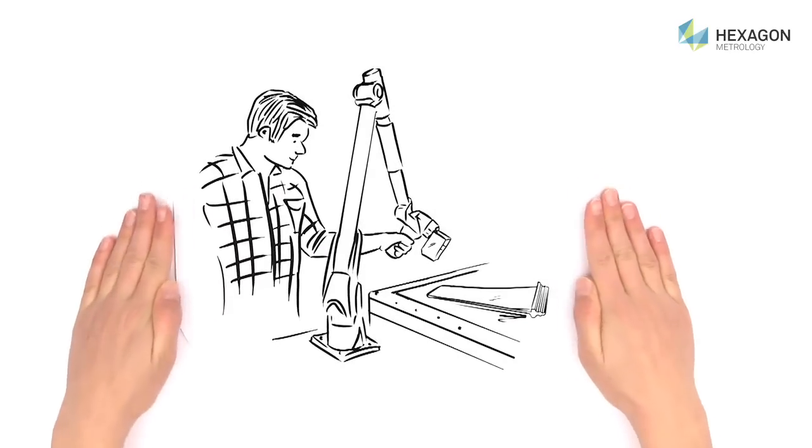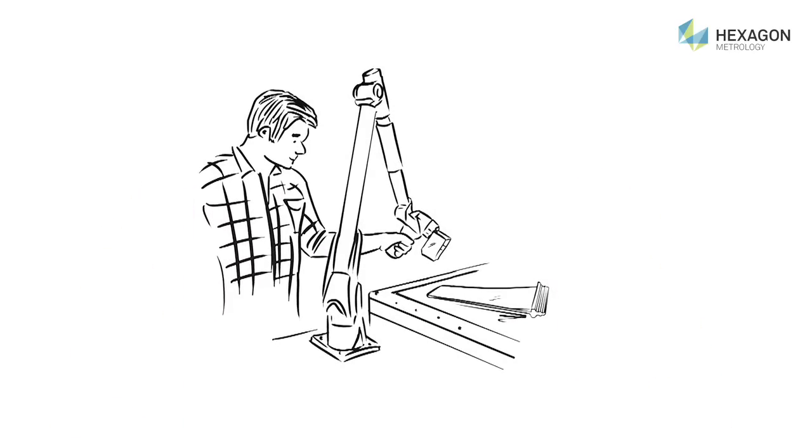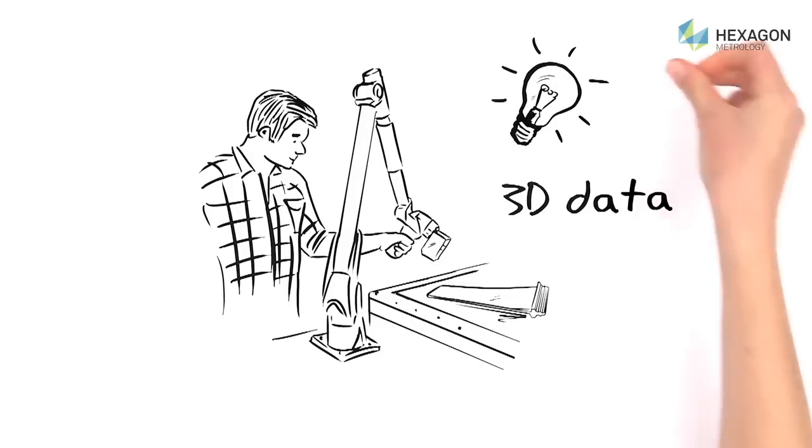Peter guides the laser over the surface of the component by hand, collecting high-density 3D data as he goes. As he does so, the scanner automatically adapts to the surface and effortlessly scans even reflective metals or black surfaces.